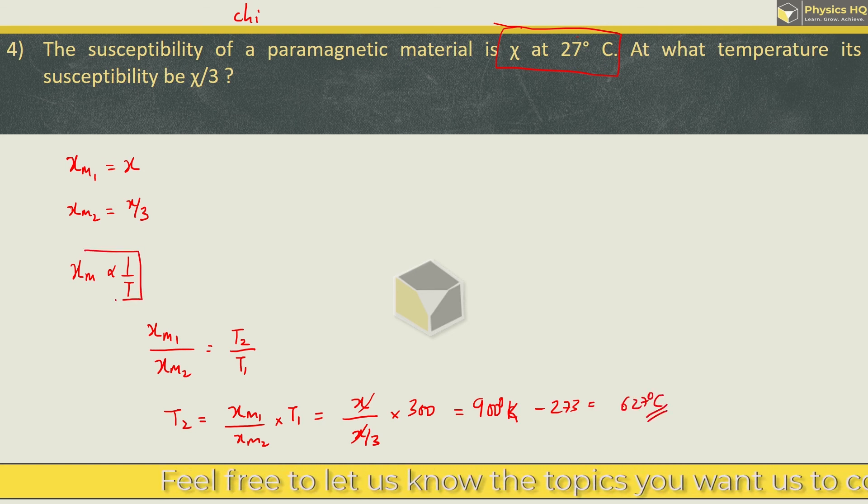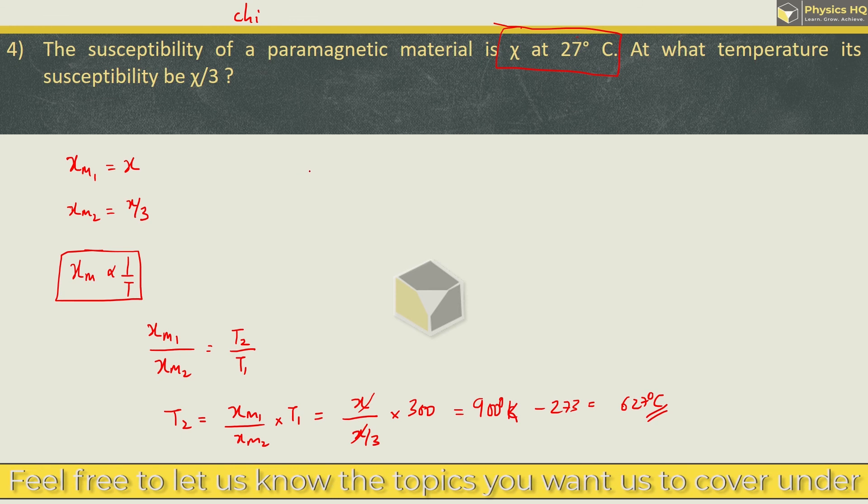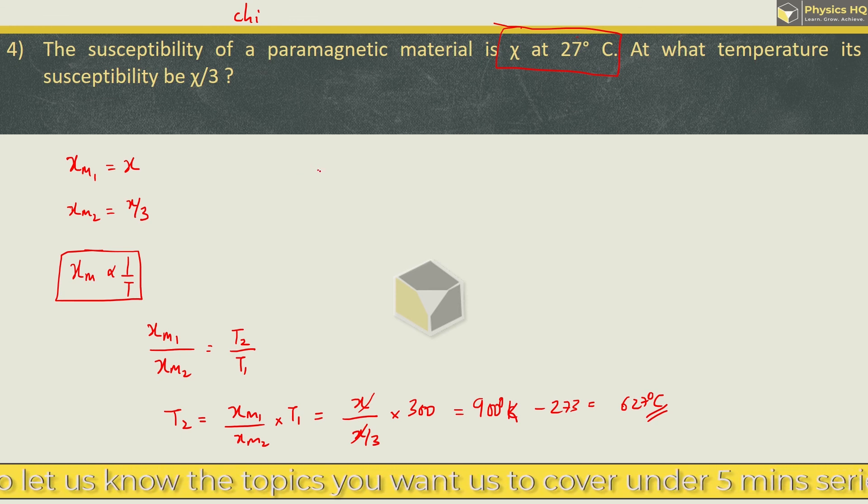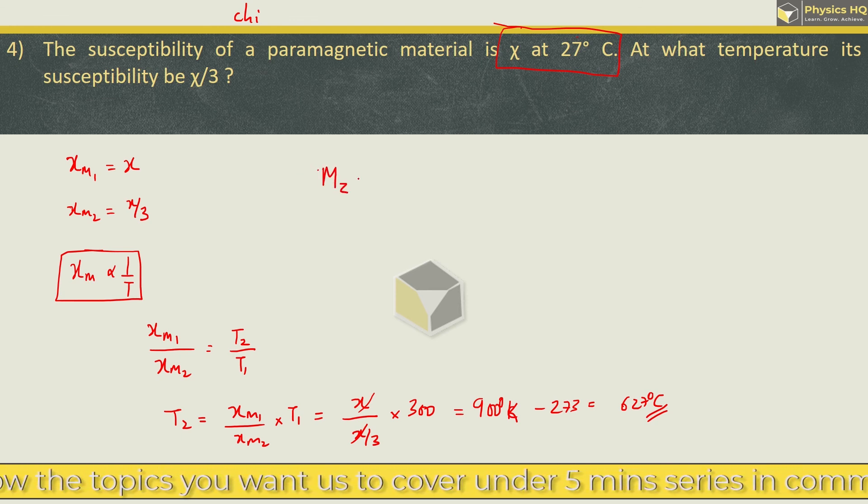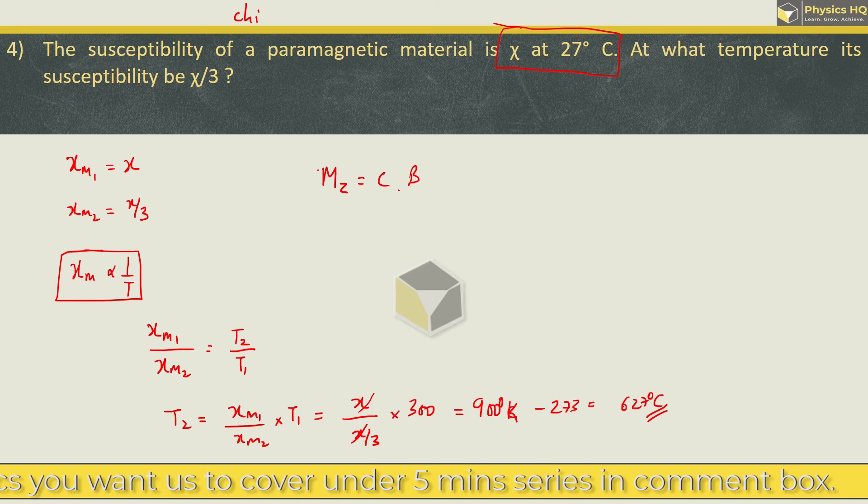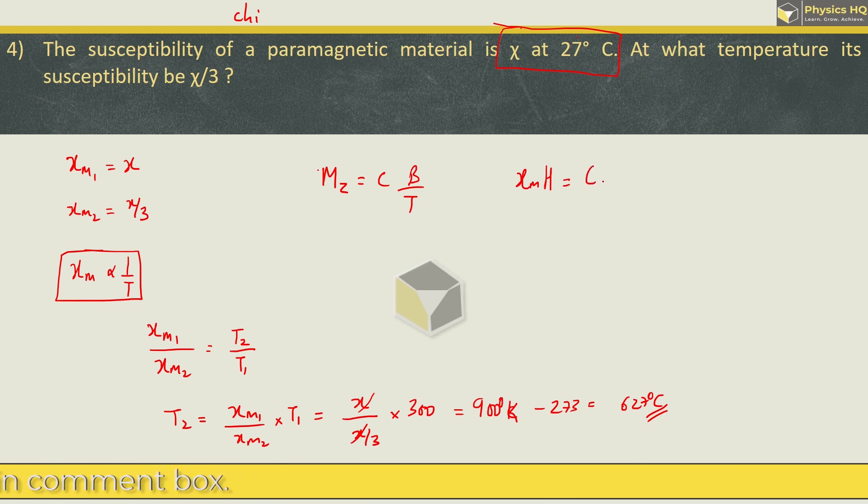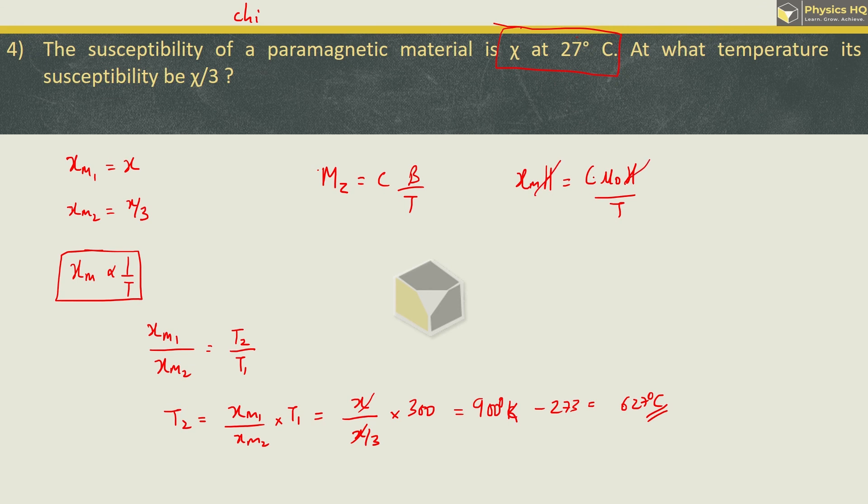Where is the relation? If you want to understand this, remember this formula. By Curie's law, magnetization is given by Cb by T. Now, M can be written as susceptibility into H. This is equal to C mu0 H divided by T. So, from both sides, H can be cancelled. C mu0 is constant. So, from here, we get susceptibility is inversely proportional to temperature.